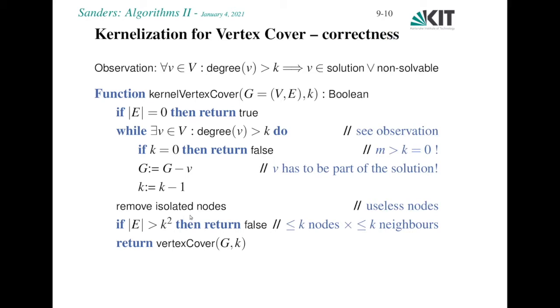What about correctness? This is according to the observation we made. We have no budget left, but the graph is also not empty, so it's infeasible to solve the problem. In this situation, we actually know that the graph cannot be empty, which would be the only way to solve the case k equals 0 positively, because we have found a vertex of degree larger than k.